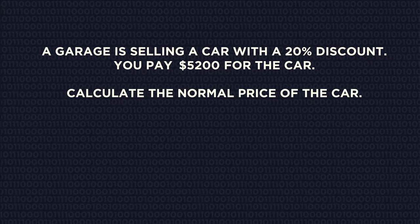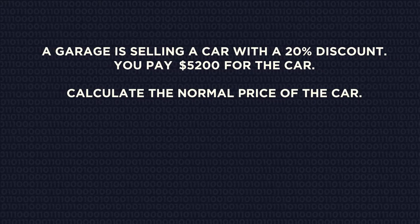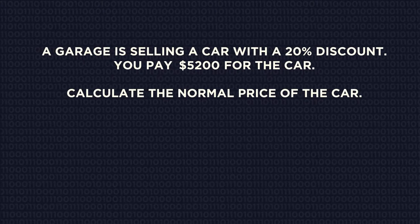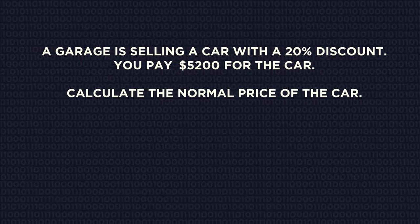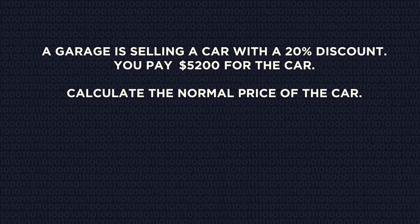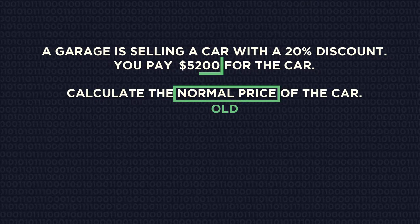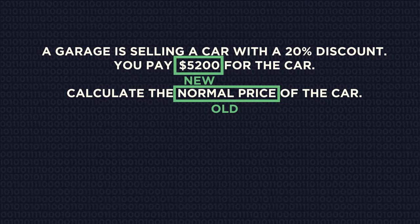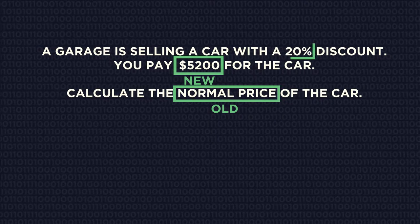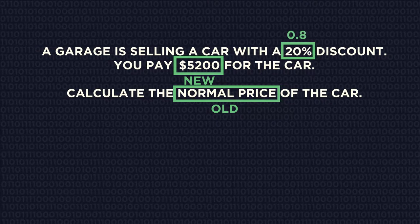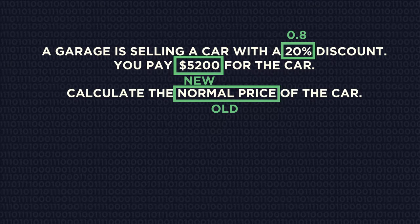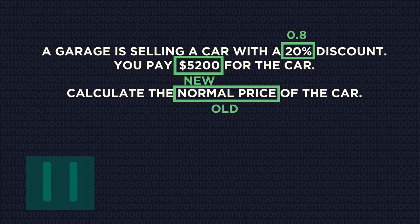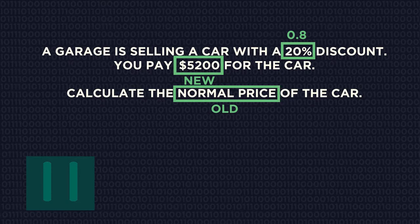So let's have a look at another example. Work out the new, old, and multiplier. The normal price is older, so it's the old value. The sale price is more recent, so it's the new value. The multiplier is 0.8 because it's a 20% decrease. Pause the video, answer the question, and click play when you're ready.